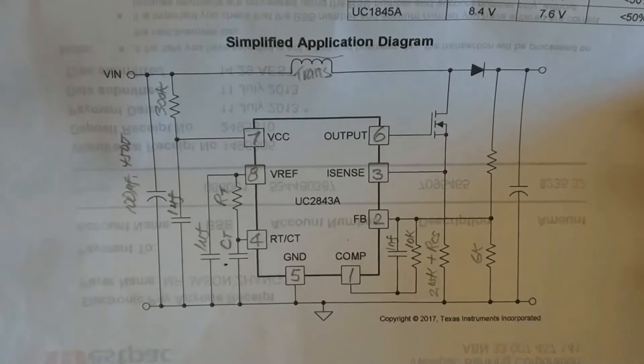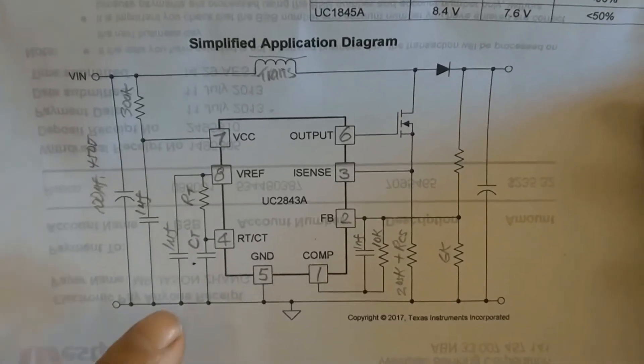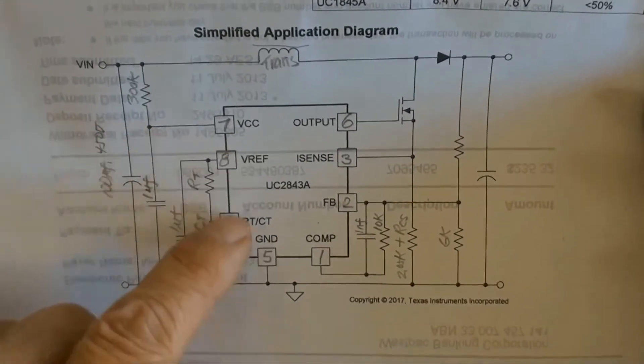This is a UC3843 in the simple circuit connection. A resistor and a capacitor together are for the oscillator frequency.